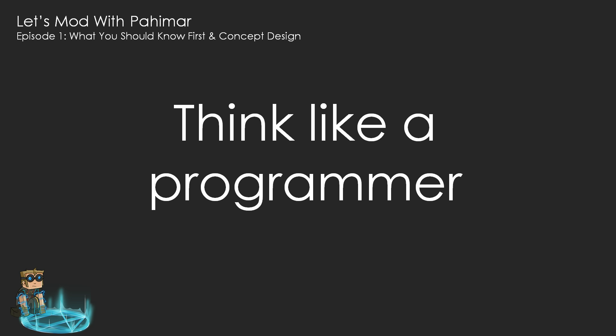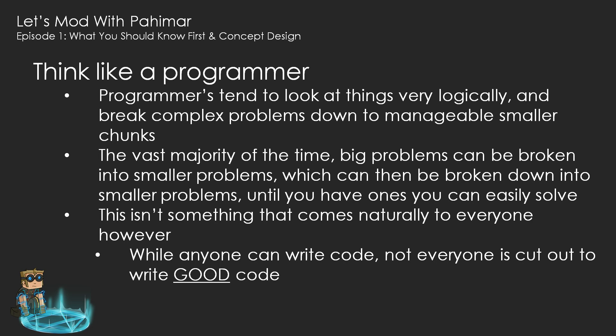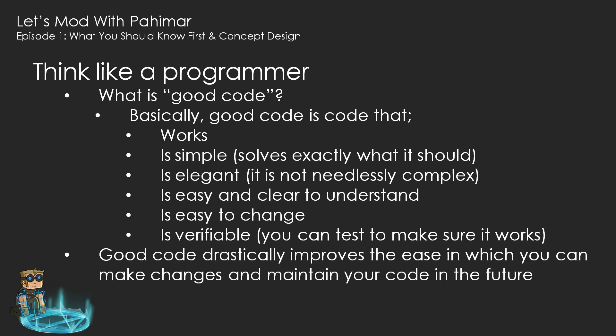The next thing you'll want to keep in mind is to think like a programmer. Programmers tend to look at things very logically and break complex problems down into manageable smaller chunks. The vast majority of the time, big problems can be broken into smaller problems, which can then be broken down into even smaller problems, until you have ones that you can easily solve. This isn't something that comes naturally to everyone. While anyone can write code, not everyone is cut out to write good code. But what is good code? Basically, good code is code that works. It's simple. It solves exactly what it should. It's elegant. It's not needlessly complex. It's easy and clear to understand. It's easy to change, and it is verifiable — you can test it to make sure it works.